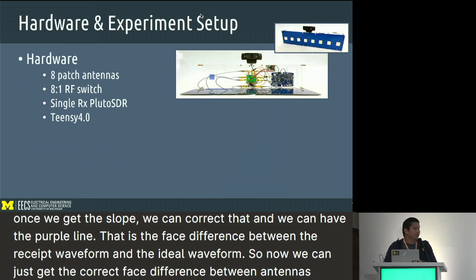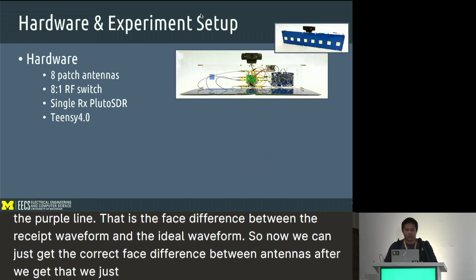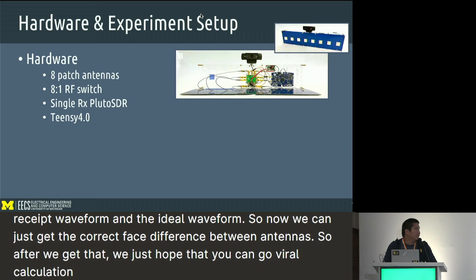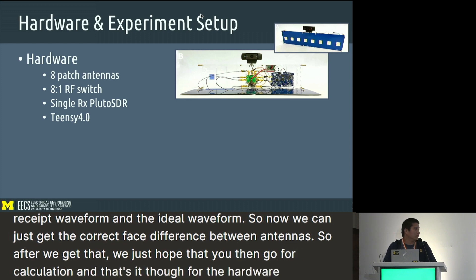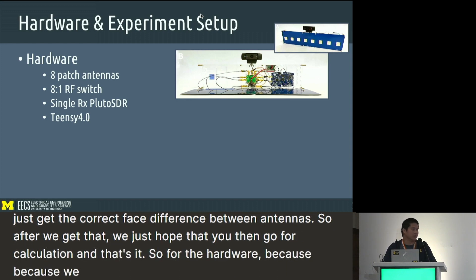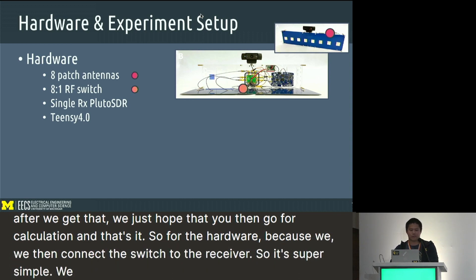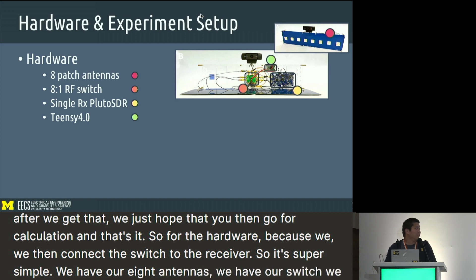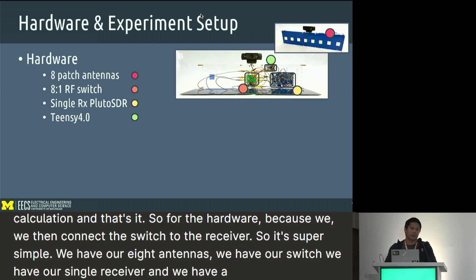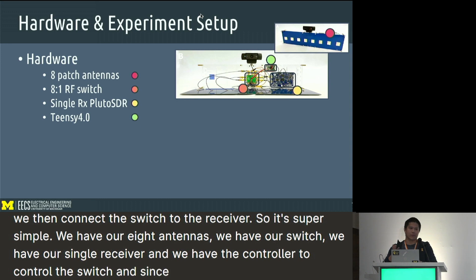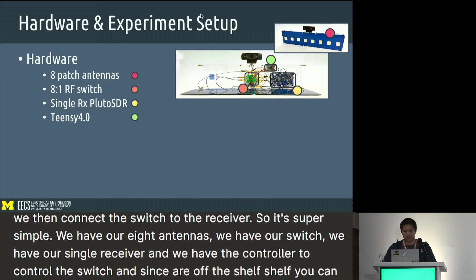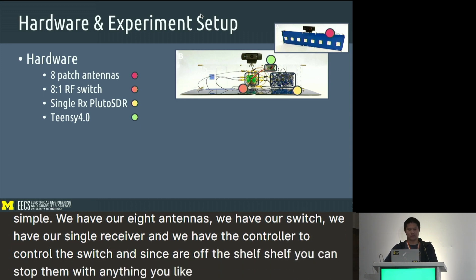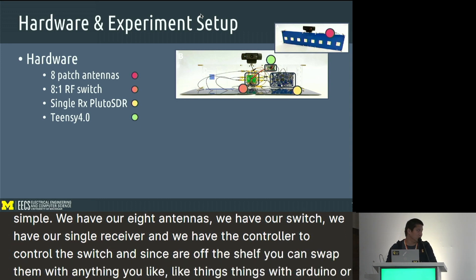After getting the phase differences, we ship it to the angle of arrival calculation, and that's it. For the hardware, because we don't connect the switch to the receiver, it's super simple. We have eight patch antennas, a switch, a single receiver, and a controller to control the switch. Since they're all off-the-shelf, you can swap them with anything — like swap the microcontroller with an Arduino or swap the receiver with any receiver you like.